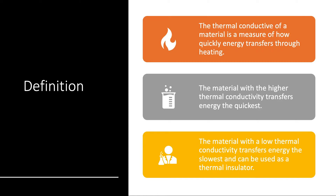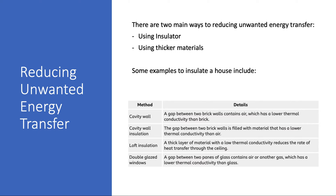The material that has the highest thermal conductivity transfers the energy the quickest, and the material with the lower thermal conductivity transfers energy the slowest and can be used as a thermal insulator. Materials that have high thermal conductivity means that energy goes through the material the quickest, and materials that have a low thermal conductivity means that energy goes through the material the slowest, meaning it can be used as an insulating material.